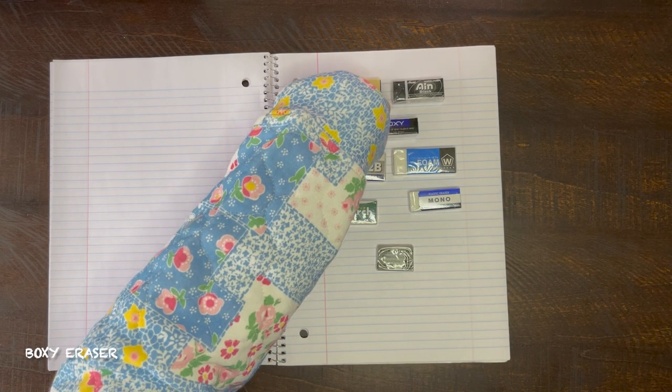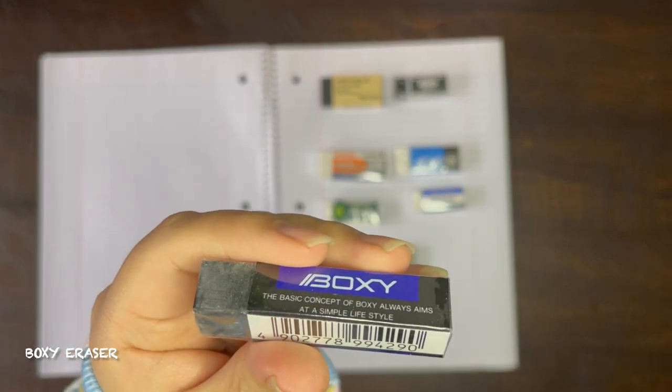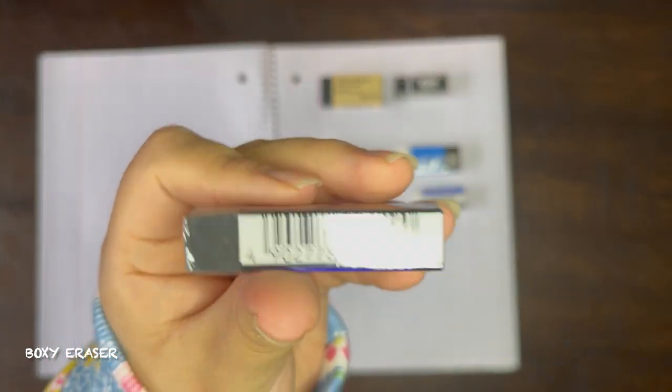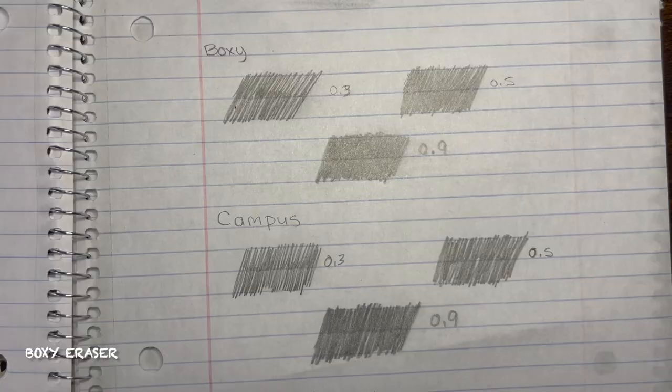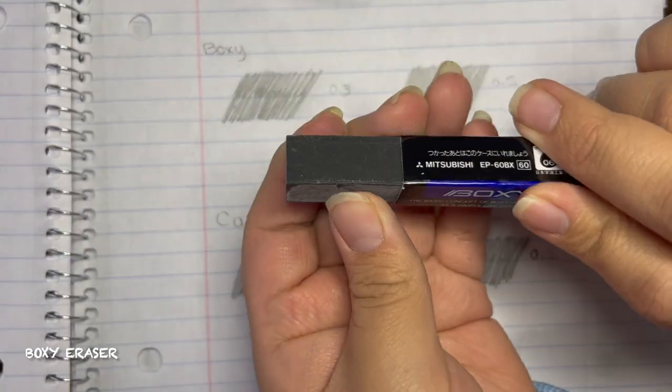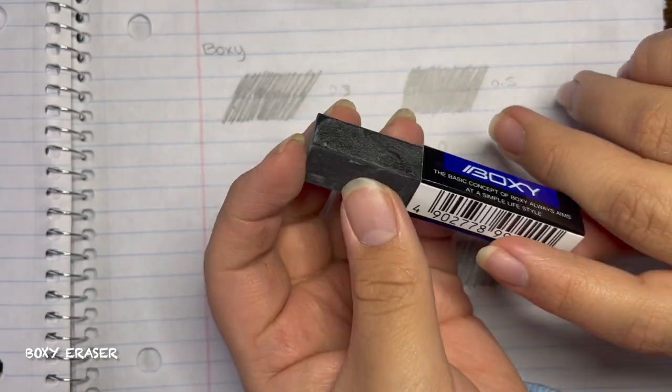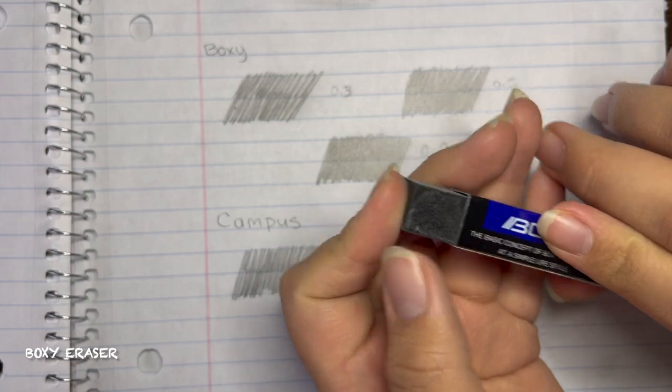This next one is a Boxy eraser. It is also labeled to have less dusting just like the other one, so hopefully it does not have the same results as the other one. When I opened this one up it had this white dusting on it. I'm not sure if it's supposed to come like that, but I just wanted to point it out. This one was also very squishy but not as much as the last one.